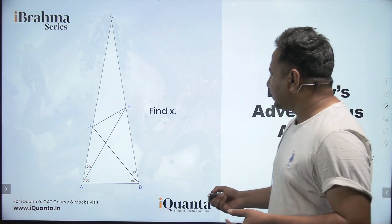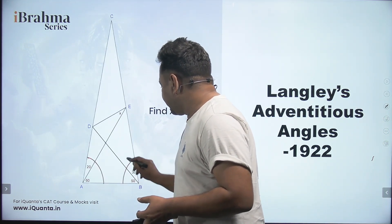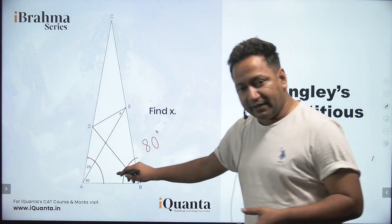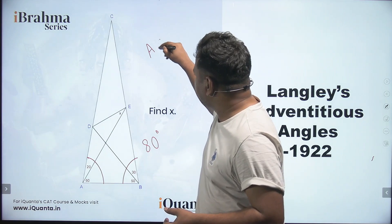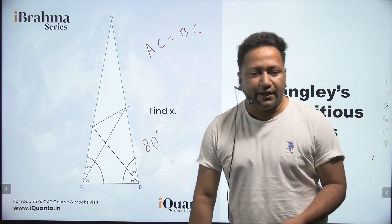One thing we are very sure of, that this complete angle and this complete angle is 80 degrees each, and since the angles are equal, that means this line AC and BC would be equal, or we can say triangle ABC is an isosceles triangle.